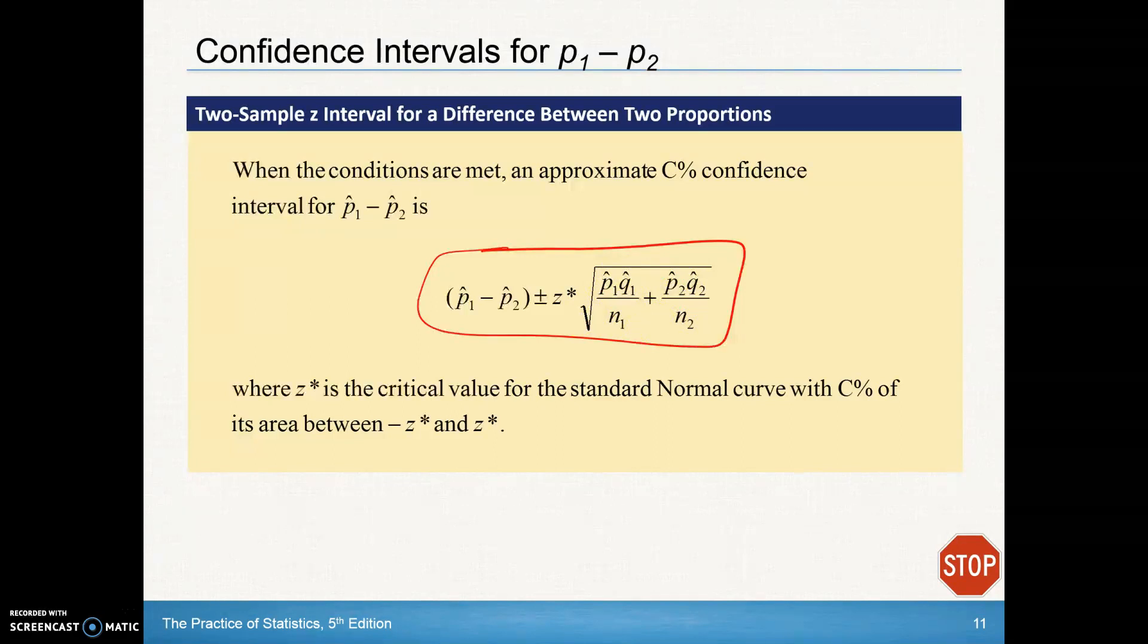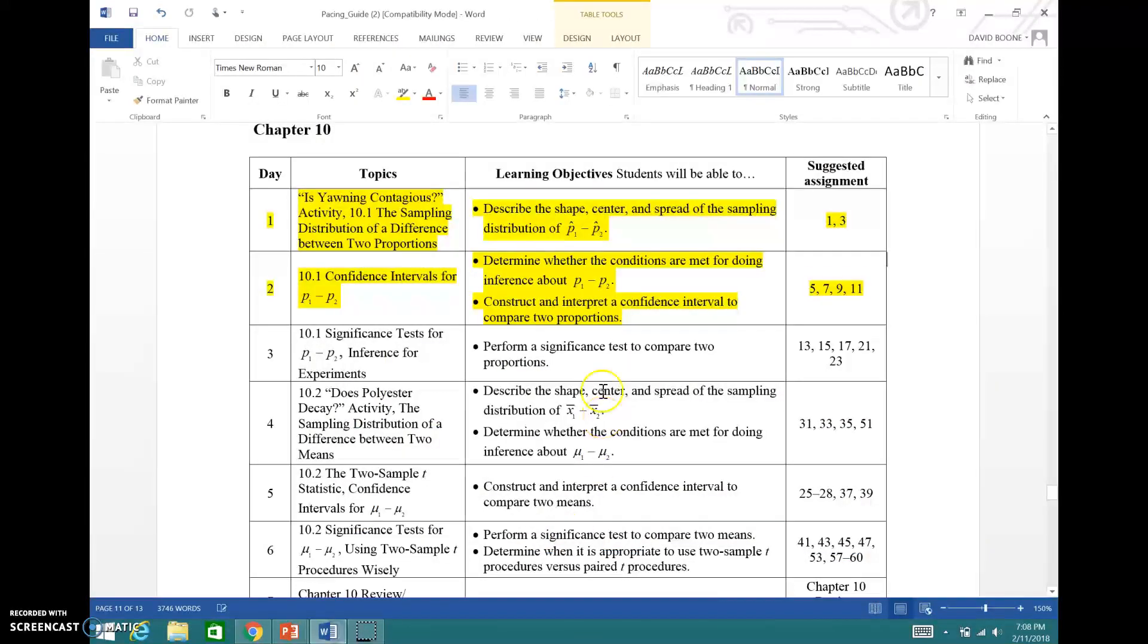We're going to stop right here for the first day. At this point, you should be able to do these problems. Day one and day two, basically doing numbers 1, 3, 5, 7, 9, and 11. We'll come back and finish section 10.1 and look at how to do a significance test using p-values. Good luck and we'll see you on the flip side.